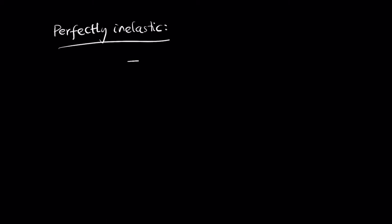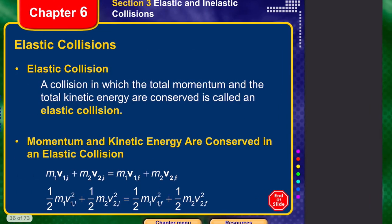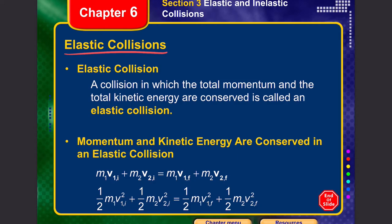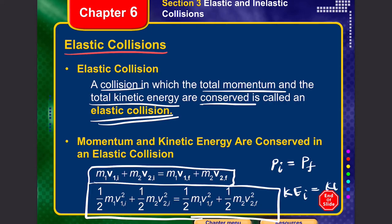This leads to the key takeaway: in a perfectly inelastic collision, momentum is conserved, but kinetic energy is not conserved. There is a loss of kinetic energy, released as heat or other forms of energy. In contrast, an elastic collision is one where both total momentum and total kinetic energy are conserved: pi = pf and KEi = KEf.